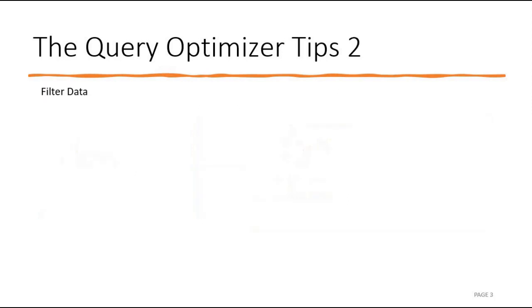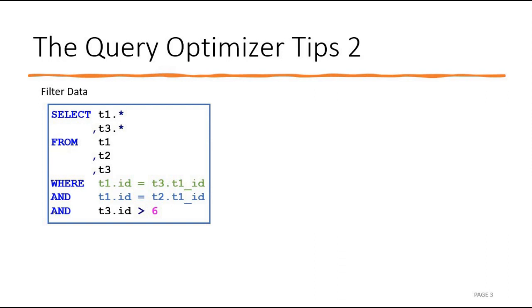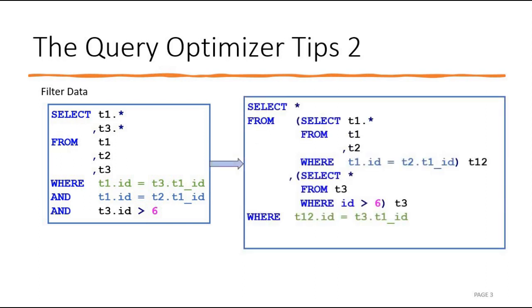Let us see another example of how we can tune a query. We have a query where we want to fetch columns from tables t1, t2, and t3. We have joined t1's ID with t3's ID column, and t1's ID is also joined with t2's ID column. Then we have a condition where t3's ID is greater than 6.